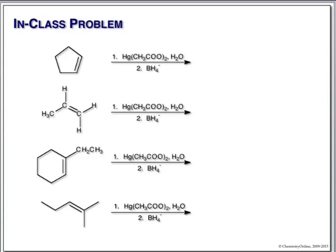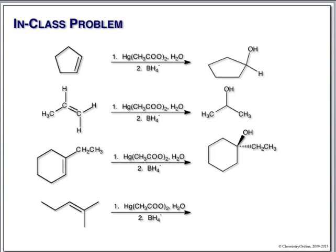For the symmetrical case, all we have to do is place a hydroxyl group on one of the carbons. For a secondary and primary carbon, the Markovnikov carbon — the secondary — is where the hydroxyl group will go. Tertiary carbon, secondary carbon — hydroxyl group on the tertiary carbon, our most stable carbocation. And here we have a tertiary carbon and a secondary carbon; hydroxyl group on the tertiary carbon.